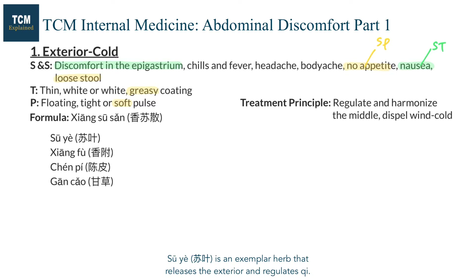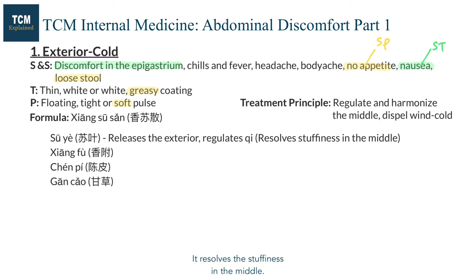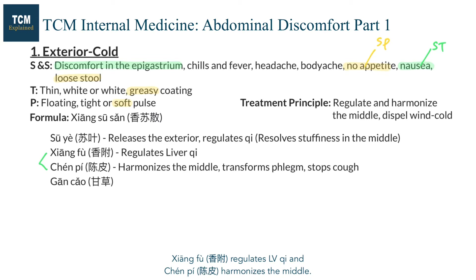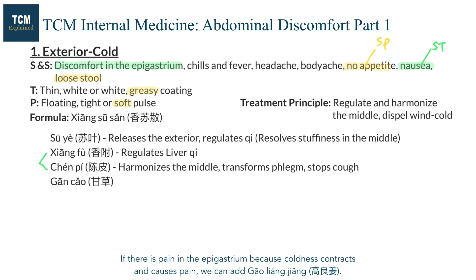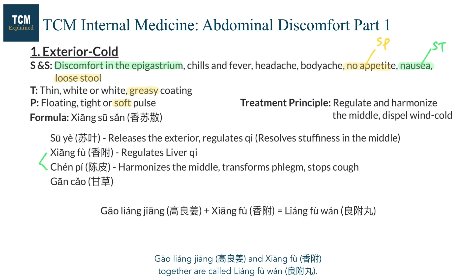Suye is an exemplar herb that releases the exterior and regulates qi; it resolves the stuffiness in the middle. And we have two more qi-regulating herbs: xiangfu and chanpi. Xiangfu regulates liver qi and chanpi harmonizes the middle; it also transforms phlegm and stops cough. If there is pain in the epigastrium because coldness contracts and causes pain, we can add gaoliangjiang. Gaoliangjiang and xiangfu together are called liangfu wan.